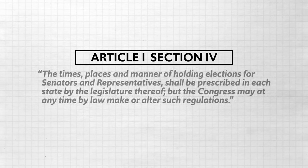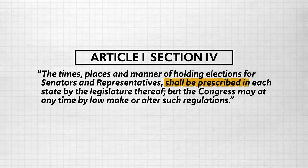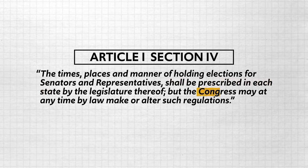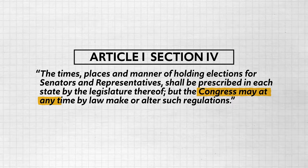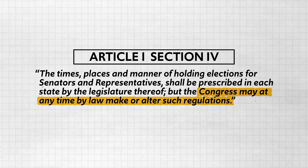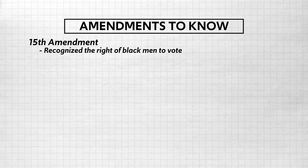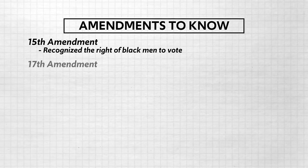Now remember what we read in Article 1, Section 4 — namely that determining who gets to vote was left to the states, but also Congress was able to admit more citizens into the franchise when it seemed fitting. Well, after the Civil War through about 1971, a series of constitutional amendments recognized the right to vote for more and more citizens, and you need to know these amendments. First is the 15th Amendment, which recognized the right of black men to vote. Second was the 17th Amendment, which granted the people the right to vote senators into office.